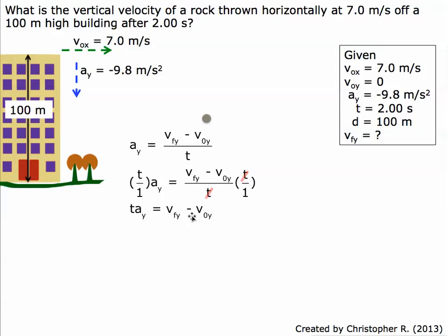Now we'll add v0y to both sides. This cancels out on the right side. Now we've got vfy isolated, and we'll flip it around so it's on the left side.